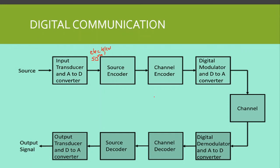We also have a channel encoder, which is the opposite of the channel decoder. The channel encoder performs error correction and detection — it detects errors and applies techniques for correcting those errors so that the data is error-free.